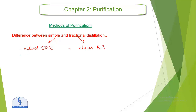This is the first difference. The second difference is that simple distillation uses a simple apparatus — just a flask and a condenser. But in fractional distillation, we are using a complex apparatus with a fractional column.